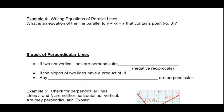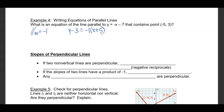Another example: What is the equation of a line parallel to y equals negative x minus 7 that contains (negative 5, 3)? The slope is negative 1, so the parallel slope is also negative 1. Using point-slope: y minus 3 equals negative 1 times (x plus 5). Distributing: y minus 3 equals negative x minus 5. Adding 3 to both sides: y equals negative x minus 2.